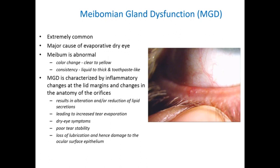What happens in meibomian gland dysfunction? It's one of the most common conditions, and it is a major cause of evaporative dry eye. In this condition there is a change in color and consistency of the meibum — from the normal cooking-oil gold appearance, it starts to change to more yellow color shades, and the consistency moves from liquid to a thick toothpaste-like meibum, which is noted in severe forms of MGD. It is characterized by inflammatory changes at the margin and changes in the anatomy of the orifices, ultimately leading to ocular surface disease with loss of lubrication and damage to the ocular surface.